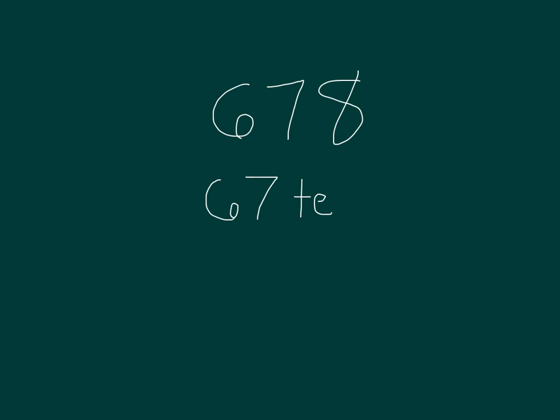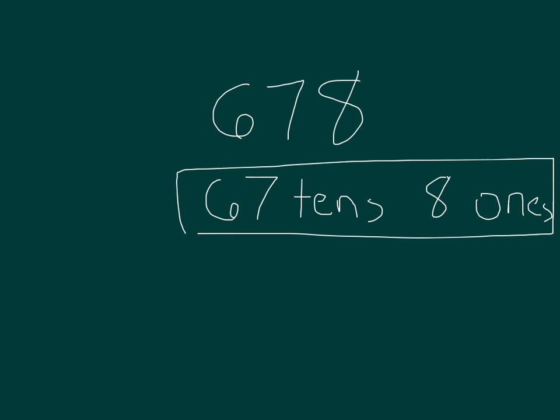I have 67 tens along with some ones. And how many ones would I have here? 67 tens, or that's worth 670, along with 8 ones. And so all together, that's 67 tens with 8 ones, also equal to that original number, 678.